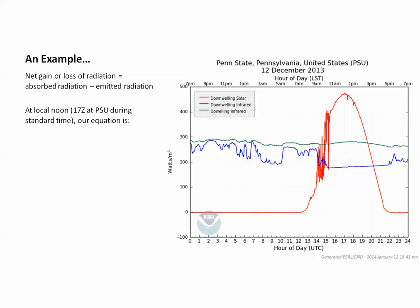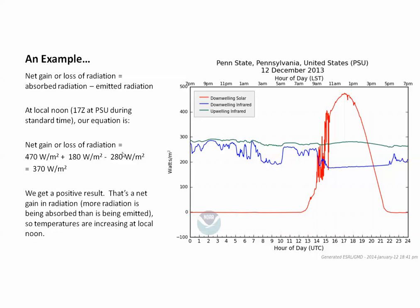We put those values into our calculation: 470 watts per meter squared for incoming solar, plus 180 for downwelling infrared, minus 280 for upwelling infrared. The result is a positive value of 370 watts per meter squared. Since we had a positive result, that means we had a net gain in radiation — more radiation is coming in and being absorbed than is being emitted — so temperatures would increase at local noon on this particular day.